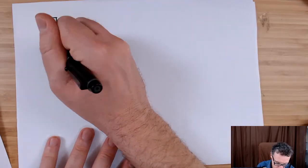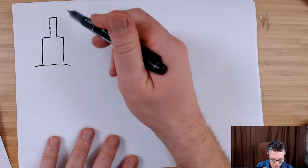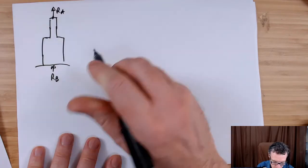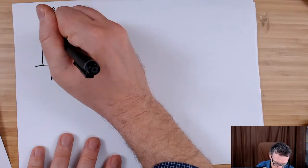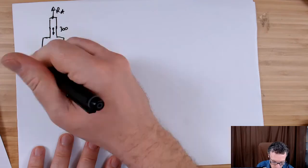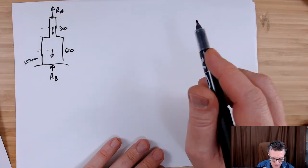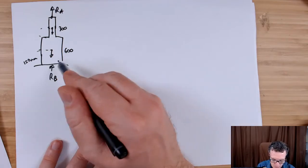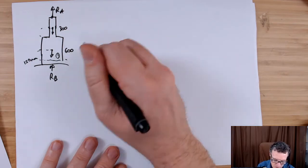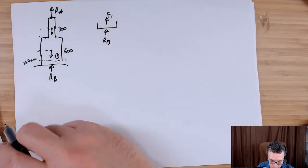There's no particular advantage to going from bottom to top or top to bottom. We have a reaction at the bottom RB, a reaction at the top RA, and we've got a load of 300 kilonewtons and a load of 600 kilonewtons. These particular sections are all the same length — 150 millimetres. So if you do your first free body diagram, you take a cut through the body and call this section 1, which exposes the internal force F1 going up against RB going in that direction.